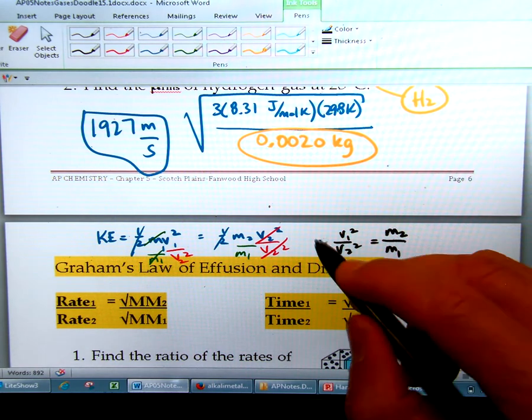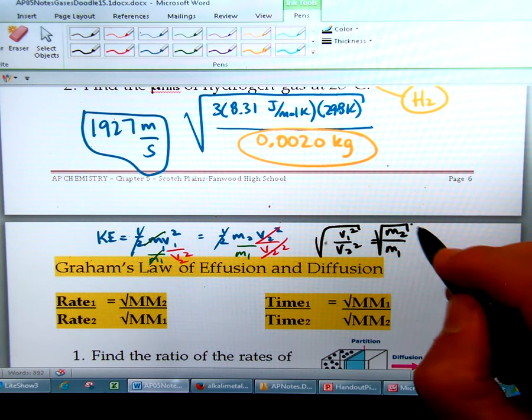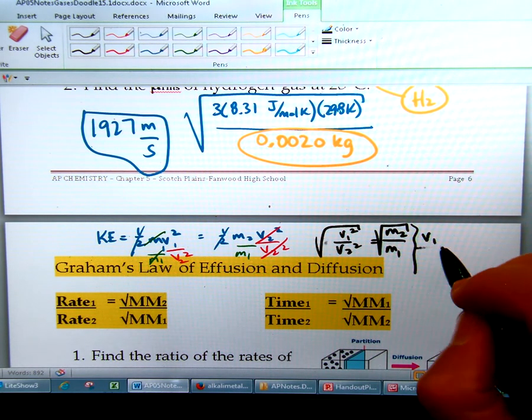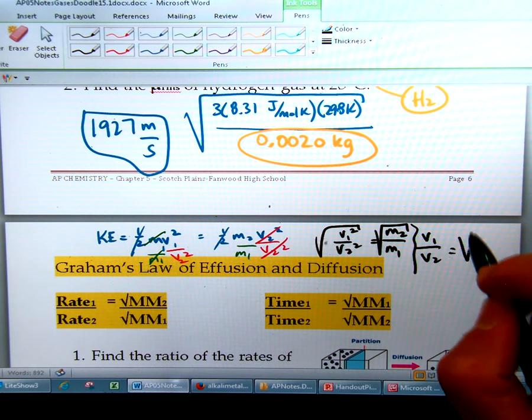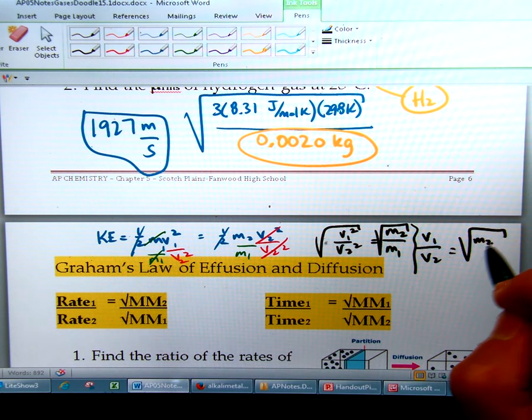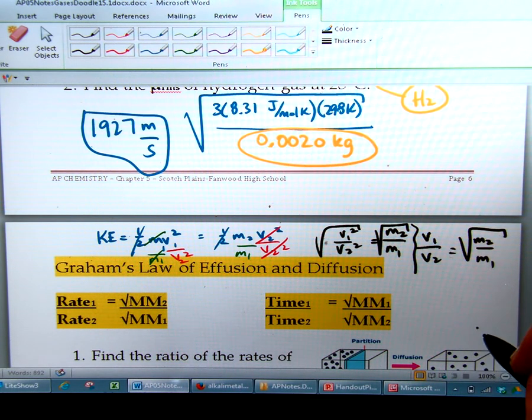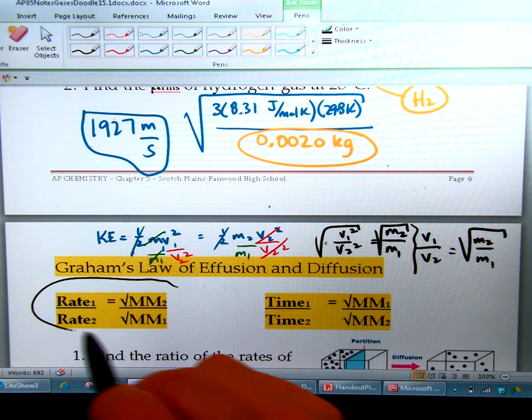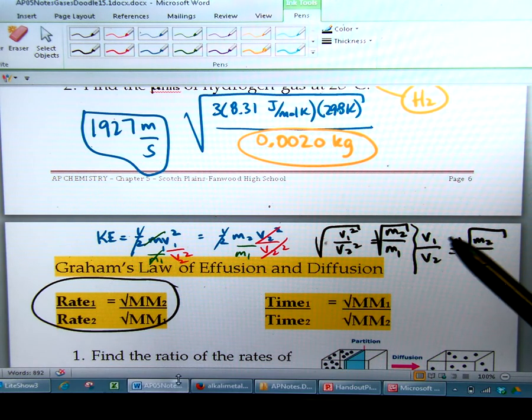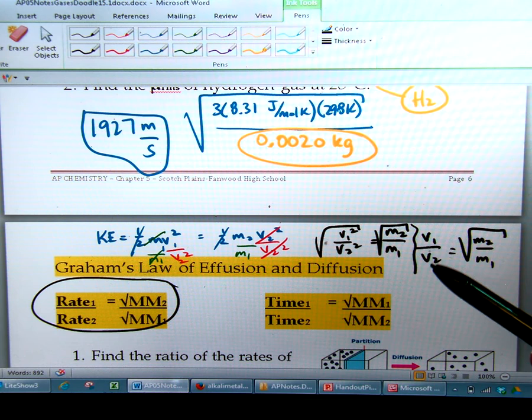And then we're going to square root both sides. So now you have v1 over v2 equals square root of m2 over m1. And that is exactly what we have here for Graham's law. So the velocity, which is the rate of gas number one to gas number two, is equal to the square root of the mass two over mass one.